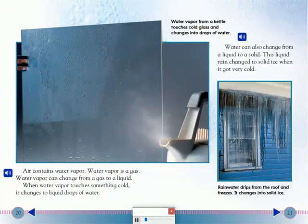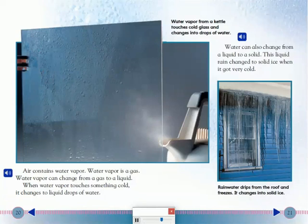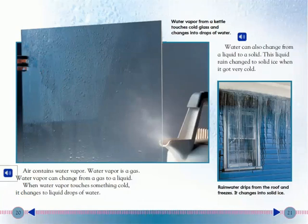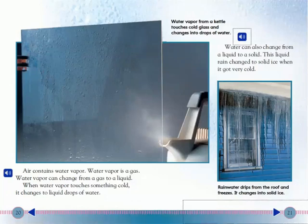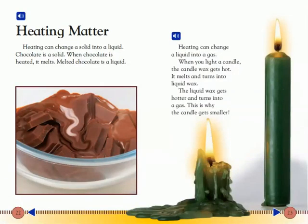Air contains water vapor. Water vapor is a gas, and it can change from a gas to a liquid. When water vapor touches something cold, it changes to liquid drops of water. Water can also change from a liquid to a solid. This liquid rain changed to solid ice when it got very cold. Air contains water.